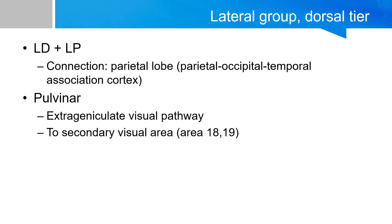The dorsal tier — lateral dorsal and lateral posterior nucleus — projects to the parietal lobe. The LD and LP nuclear group are located dorsally in the thalamus and project superiorly to the dorsal portion of the cortex, which is the superior parietal lobule, part of the sensory association cortex and the general parietal, occipital, and temporal association cortex.